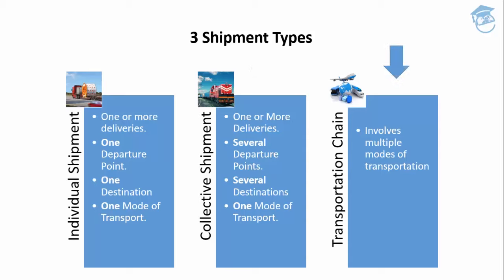The third shipment type is the transportation chain, which differs from the first two in that it involves multiple modes of transportation in the fulfillment of a particular delivery. The transportation chain is more complex than the individual or collective shipment, and because it involves multiple modes of transportation and several points of departure and destinations, there is a prerequisite involved.